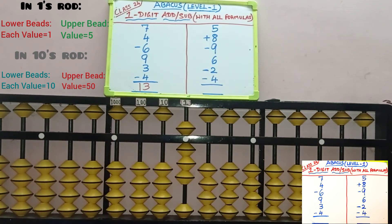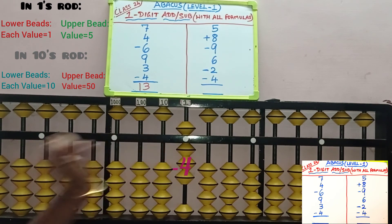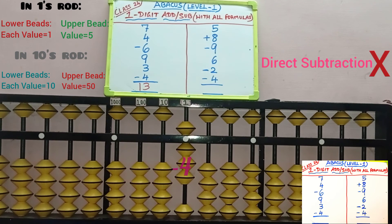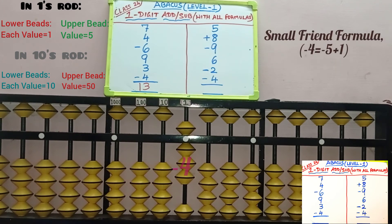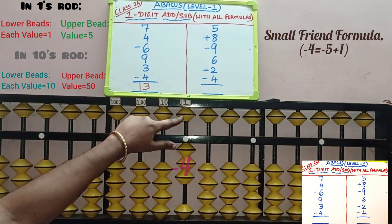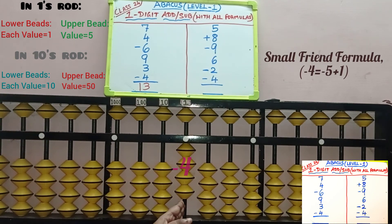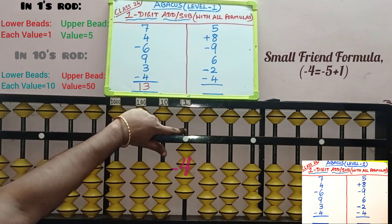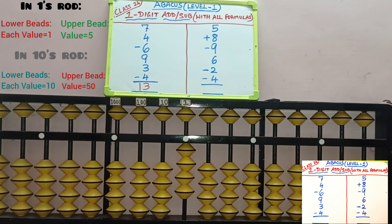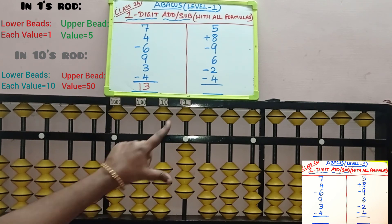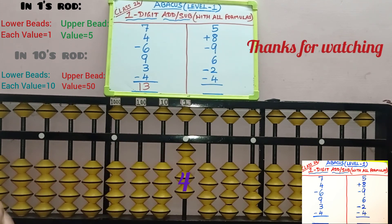Last row, minus 4 — we need to remove 4 beads from the 1 slot. Only 3 beads exist here to remove, so direct subtraction is not possible. First check small friend — minus 5, and while removing 5, 4's small friend is 1, so add that 1 bead: plus 1. 4 is subtracted from the 1 slot with minus 5 plus 1. Sum is completed. Check the answer: only the 1 slot has a value, so 4 is the answer.